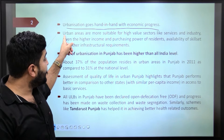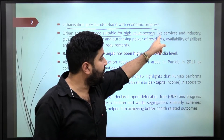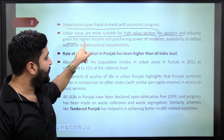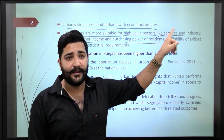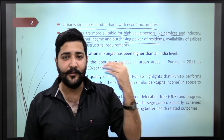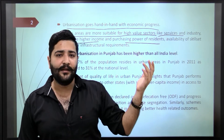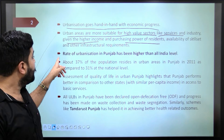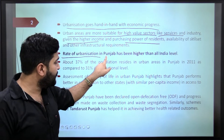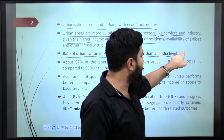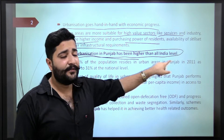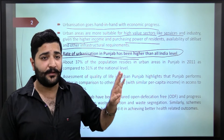Further, urban areas are more suitable for high-value sectors like services and industry, given the higher income and purchasing power of residents. It is generally observed that purchasing power of residents is higher in urban areas. And here is one startling fact — the rate of urbanization in Punjab has been higher than at the all-India level.